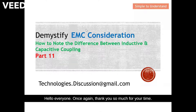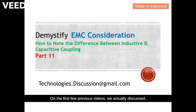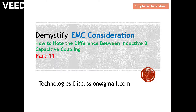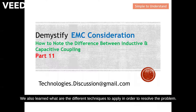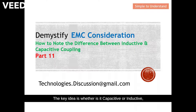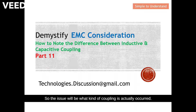Hello everyone, thank you for your time today. I'm going to continue our discussion on EMC considerations. In the previous videos we discussed what is capacitive coupling and what is inductive coupling. Capacitive coupling is also known as E-field coupling, and inductive coupling is also known as B-field or magnetic field coupling. We also learned different techniques to apply in order to resolve these problems. The key idea is whether it is capacitive or inductive — we need to apply different techniques to mitigate the problem, so the issue is knowing what kind of coupling is actually occurring.